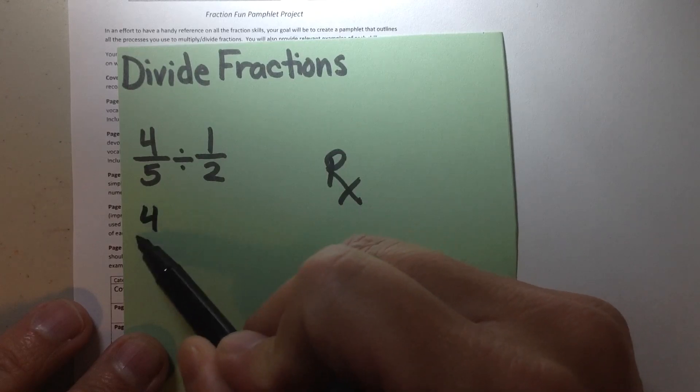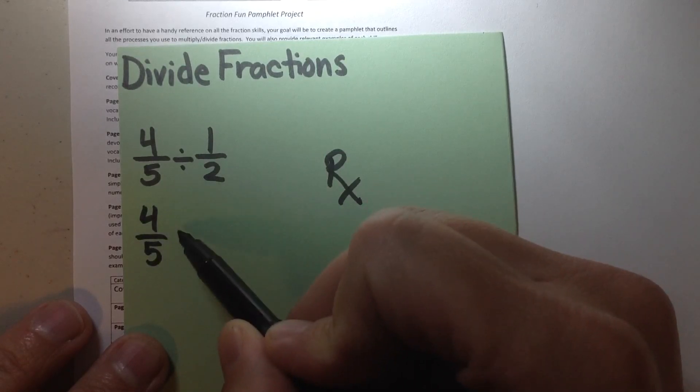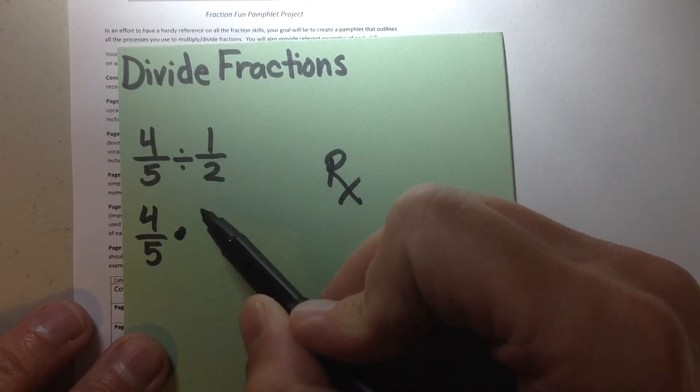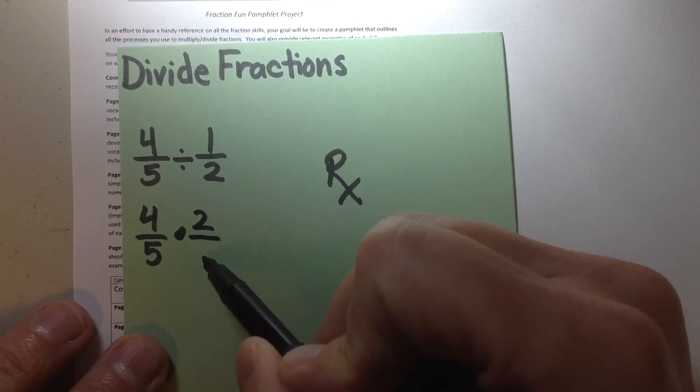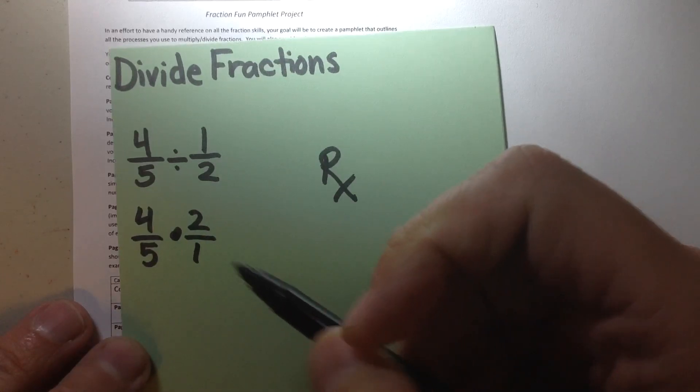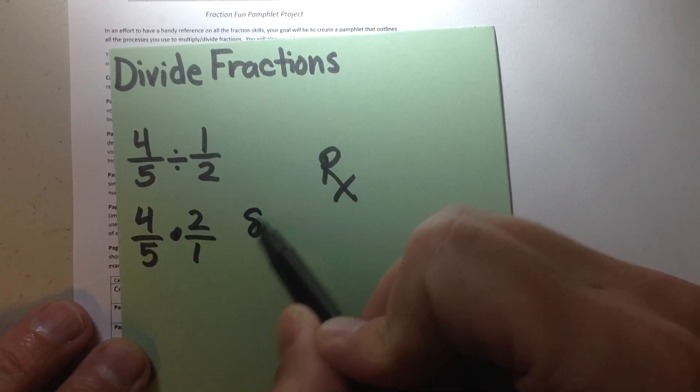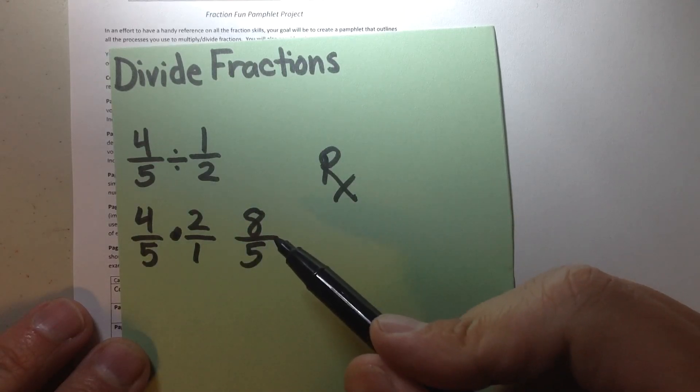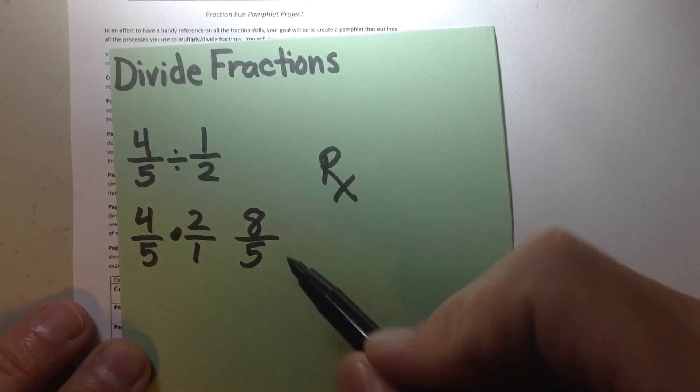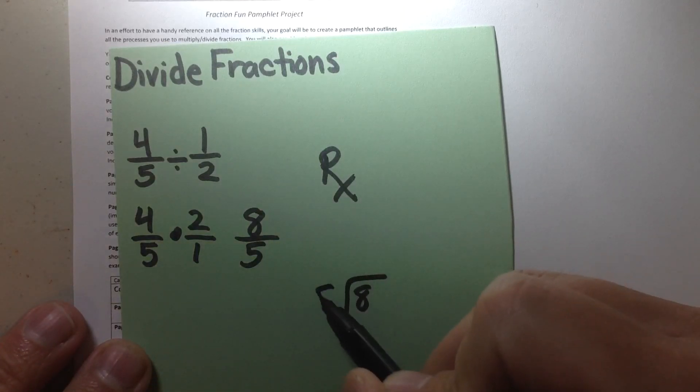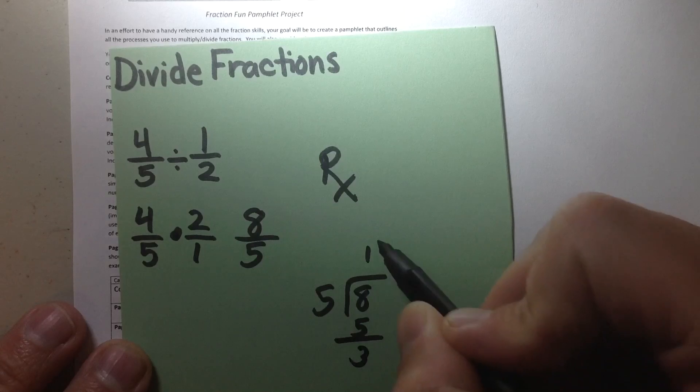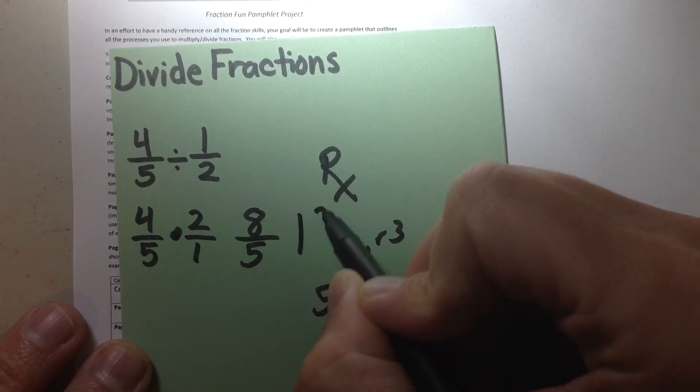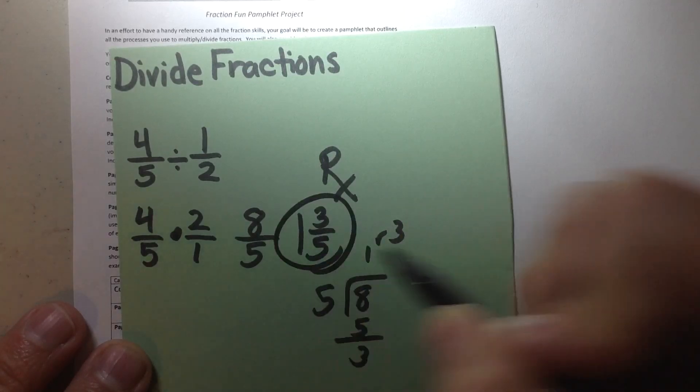We know the multiplicative inverse property states that we can divide fractions by multiplying by the inverse of the divisor. So we're going to go ahead and rewrite our dividend. We're going to change the dividing sign to multiplication, and we're going to do the multiplicative inverse. We're going to reciprocal 1 over 2 and change it to 2 over 1. And now we can go ahead and multiply, and we've got an answer of 8 over 5. Now we're going to utilize our skills of changing improper fractions to mixed numbers, and go ahead and divide that, 8 divided by 5 goes in one time with a remainder of 3. And so I know the answer is 1 and 3 fifths for my division problem.